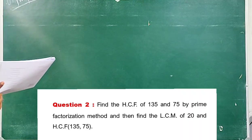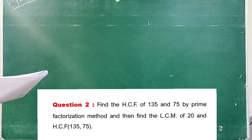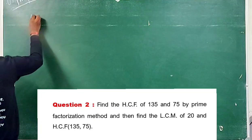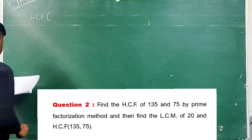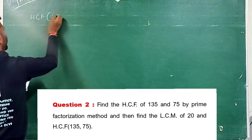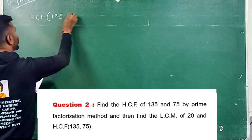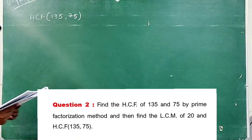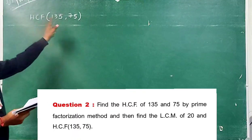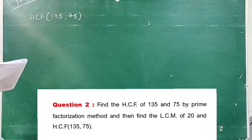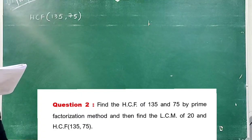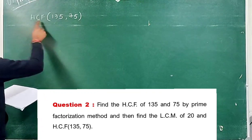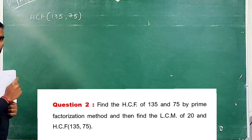The next question: find the HCF of 135 and 75 by prime factorization method. Then find the LCM of that answer with 20. So first we find the HCF of 135 and 75 — we'll get some answer — and then we should find the LCM of that answer and 20.